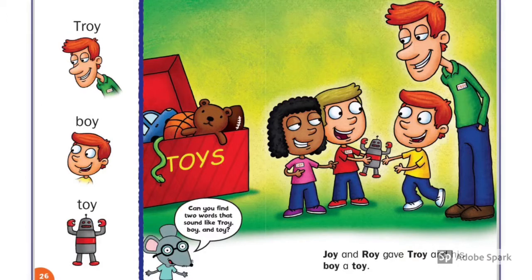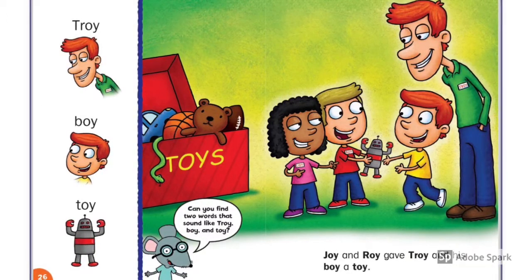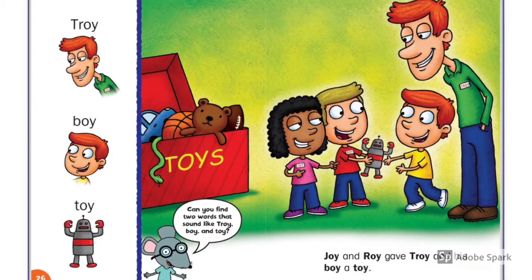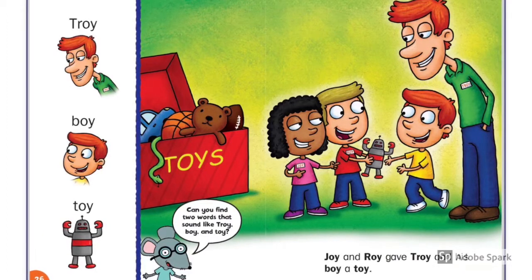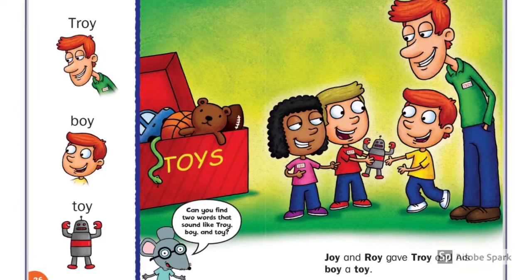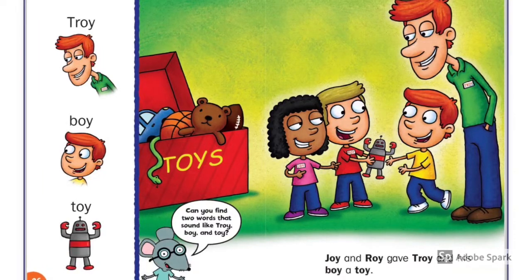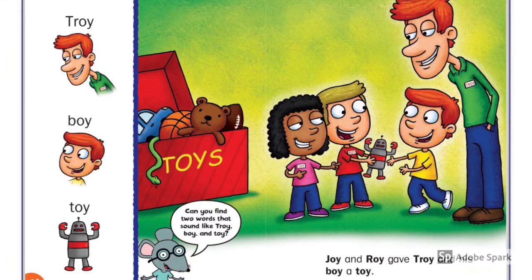Troy, boy, toy. Joy and Roy give Troy and his boy a toy. Look at the toy — what toy is it? Look at the people — how do they feel? Look at the toy box — is it opened or closed?